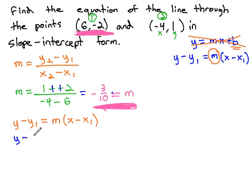Which is negative 2, minus negative 2 is the same as adding positive 2, equals m my slope, negative 3 tenths x, minus x1, which is 6. Oops, forgot my parentheses. Those are very important.